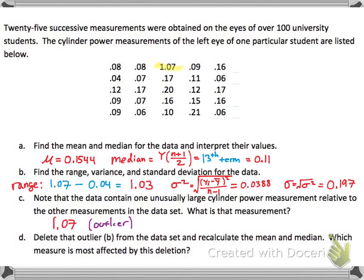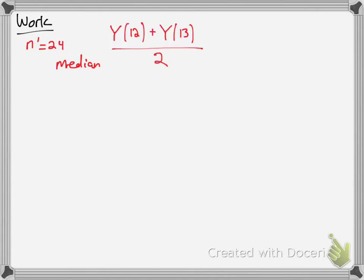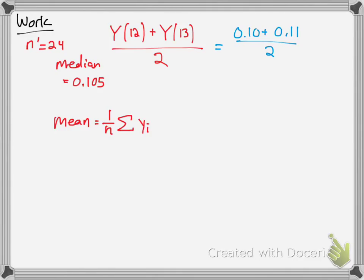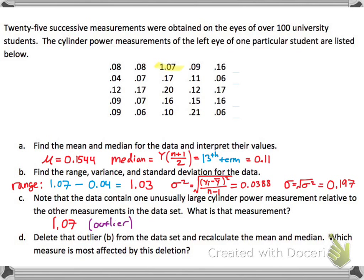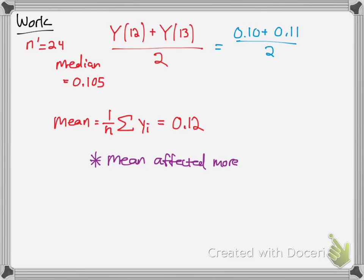If you delete that outlier from the data, recalculate the mean and median, and ask what's most affected. The new sample size is 24 (N prime). For the median with an even number, you take the 12th and 13th terms and divide by 2, giving a median of 0.105. For the mean, add all digits excluding 1.07 and divide by 24, giving 0.12. Comparing to the original mean of 0.1544 and median of 0.11, it is clear that the mean is affected more by removing the outlier.